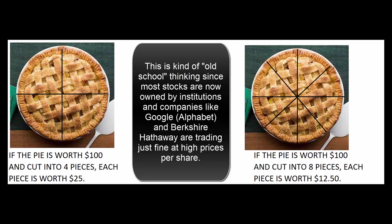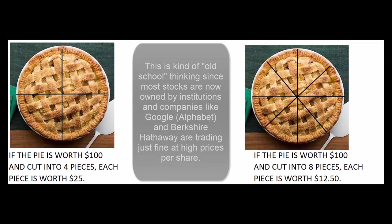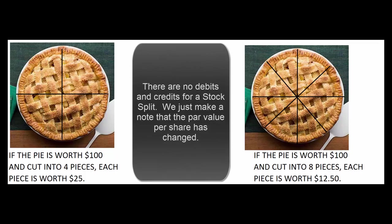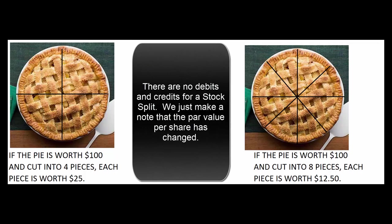The good news is it's really simple for us as accountants. For a stock split there is no journal entry — there's no money changing between accounts. All we do is make a note that, for instance in a two-for-one split, if the par value were two cents per share before the split, the new par value is now one cent per share.